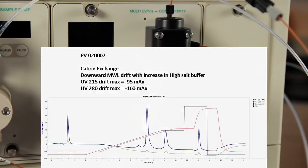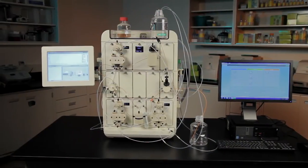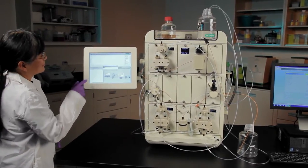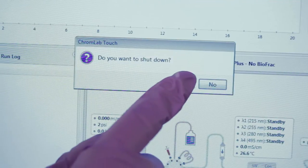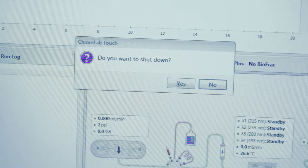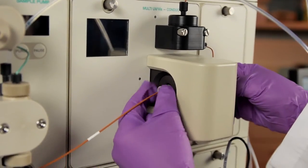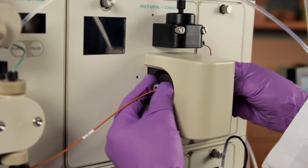To clean and remove bubbles from either a single wavelength or multi-wavelength UV detector, follow these steps. On the touch screen, select Shut Down on the drop-down menu to exit Chrome Lab and shut down the NGC instrument. Disconnect the inlet and outlet tubing from the UV cell.